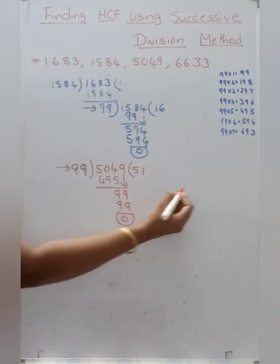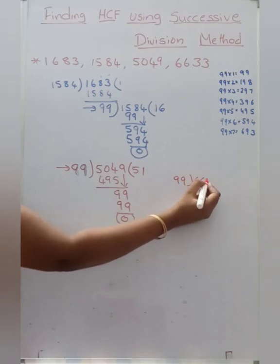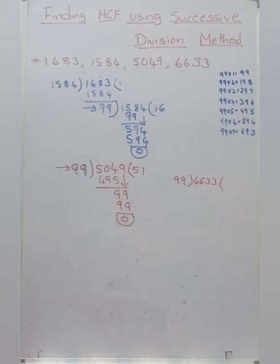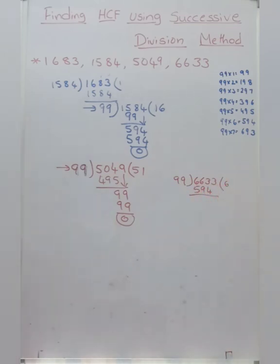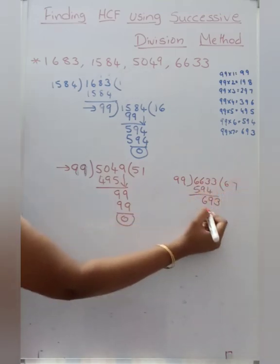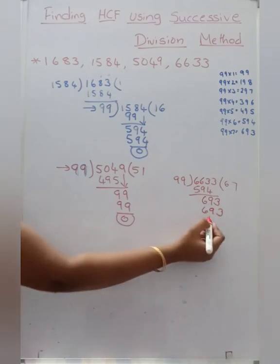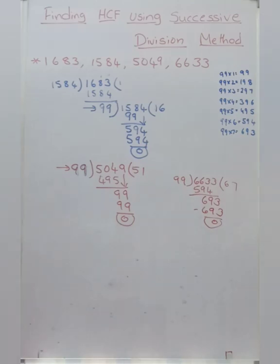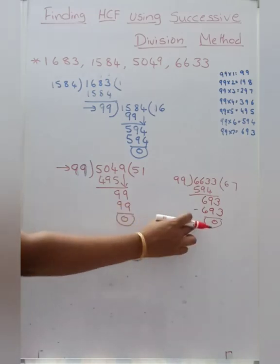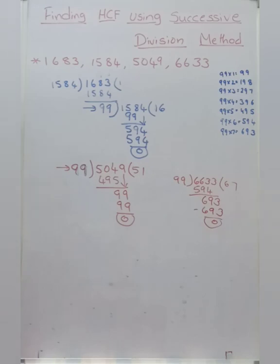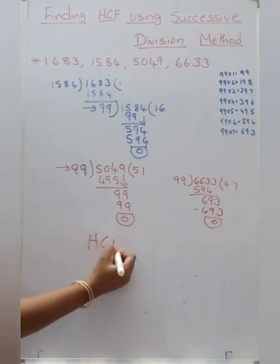One more number is there — that is 6,633. The nearest number is 663, which is 6 times, that is 594. Bring down the next digit: 9, and drag down that 3. Is there 693 in the 99 table? Yes — 7 times, that is 693. So in this case also we got 0 as remainder the first time only. By dividing with 99, we got 0 as remainder. So the HCF of these four numbers is 99.